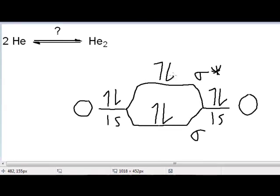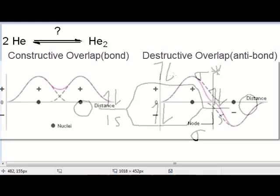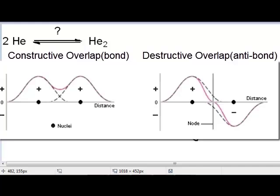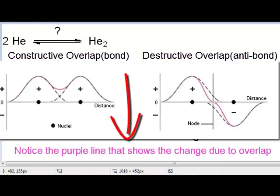In the sigma orbital, those two electrons, or the waves that represent those electrons, are actually overlapping constructively to form what we would think of as a bond.